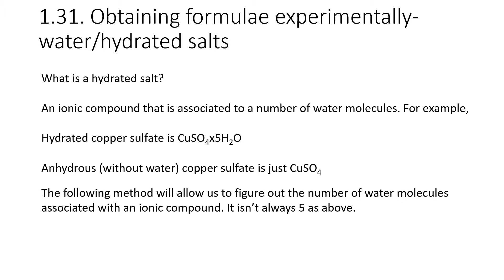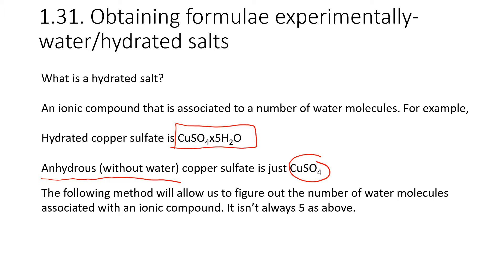For example, hydrated copper sulfate. Copper sulfate on its own — anhydrous, without water — is CuSO₄. But when five water molecules associate themselves with it you get hydrated copper sulfate. We're going to look at a method to figure out how we know it's five, because it's not five for everything — it's five for copper sulfate.